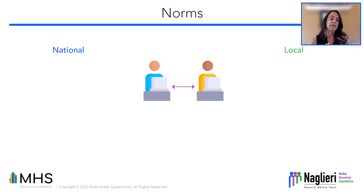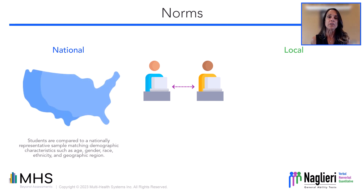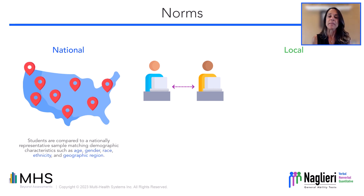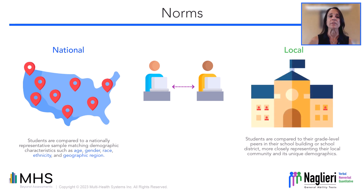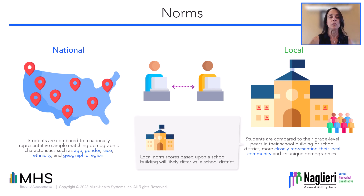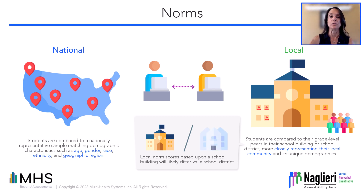We've used national norms for a very long time. By definition, a national norm is created using a very large sample of students who match the demographic makeup of the country. In a local norm, however, a student is compared to the same grade peers in the school building or school district. This means the comparison group is more closely representative of the local community and its unique demographic makeup. A student's local norm score based upon individual school buildings will likely be different than their local norm score based upon a school district.